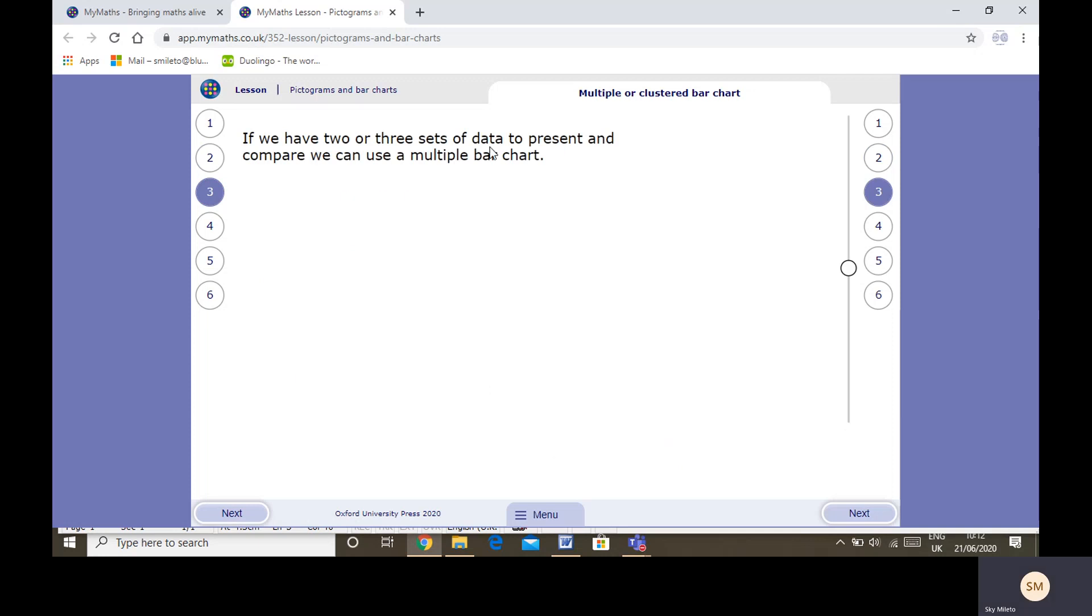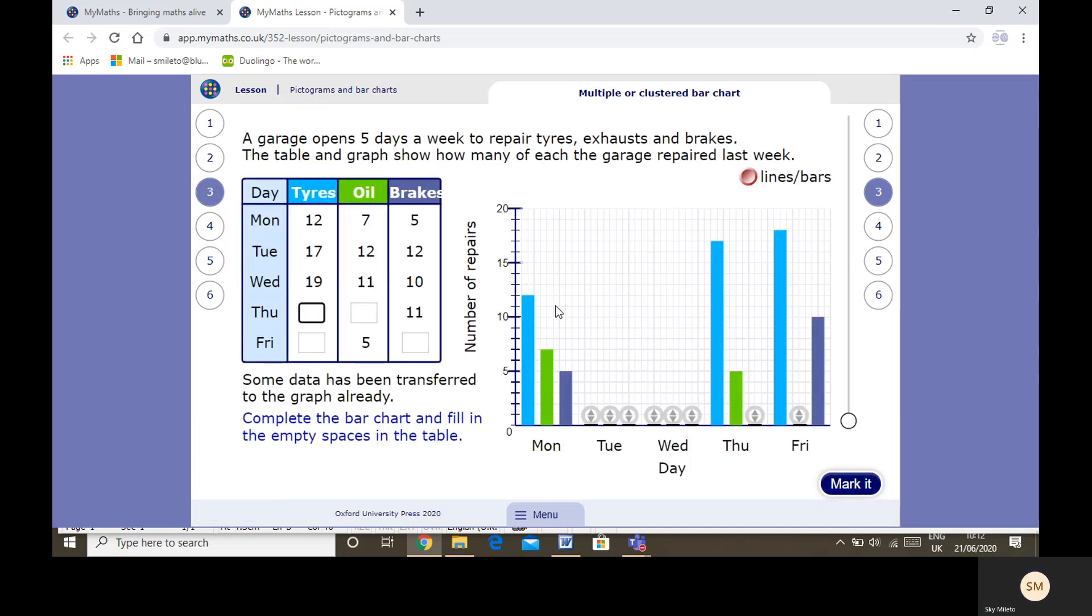So if we had two or three sets of data to present, we could use a multiple bar chart. This looks very complicated, doesn't it? We know that the garage opens five days a week to repair tires, exhaust, and brakes. The table and the graph show how many of each of these represent. Some of the data's been transferred to the graph already, and some is in the bar chart and needs to be transferred onto the graph. So I'm going to complete the table first.